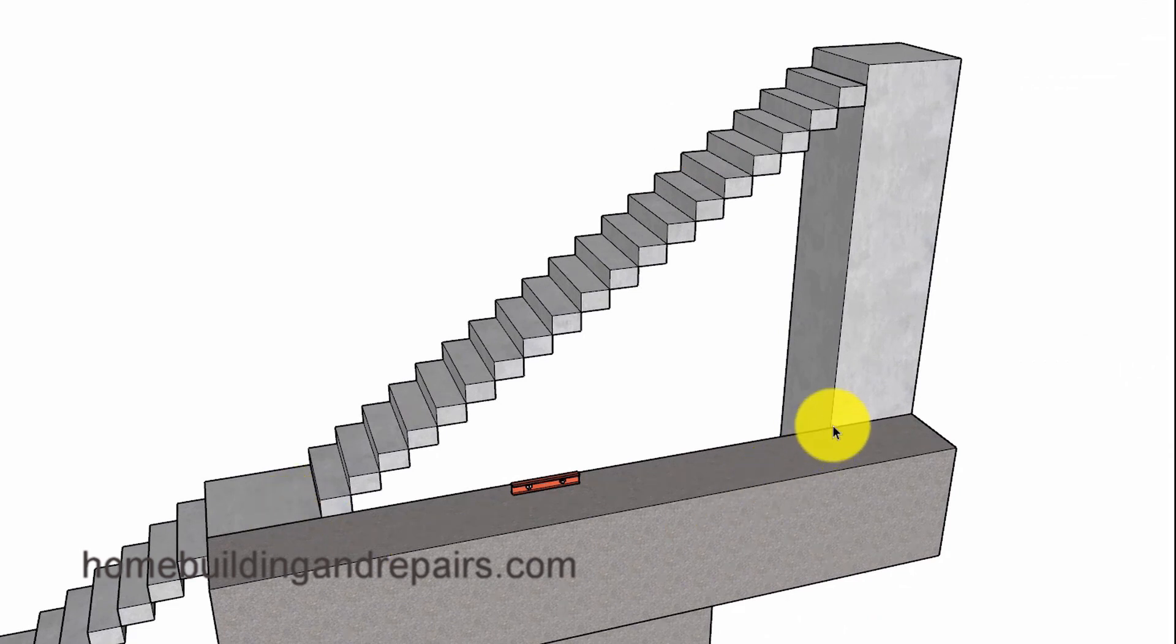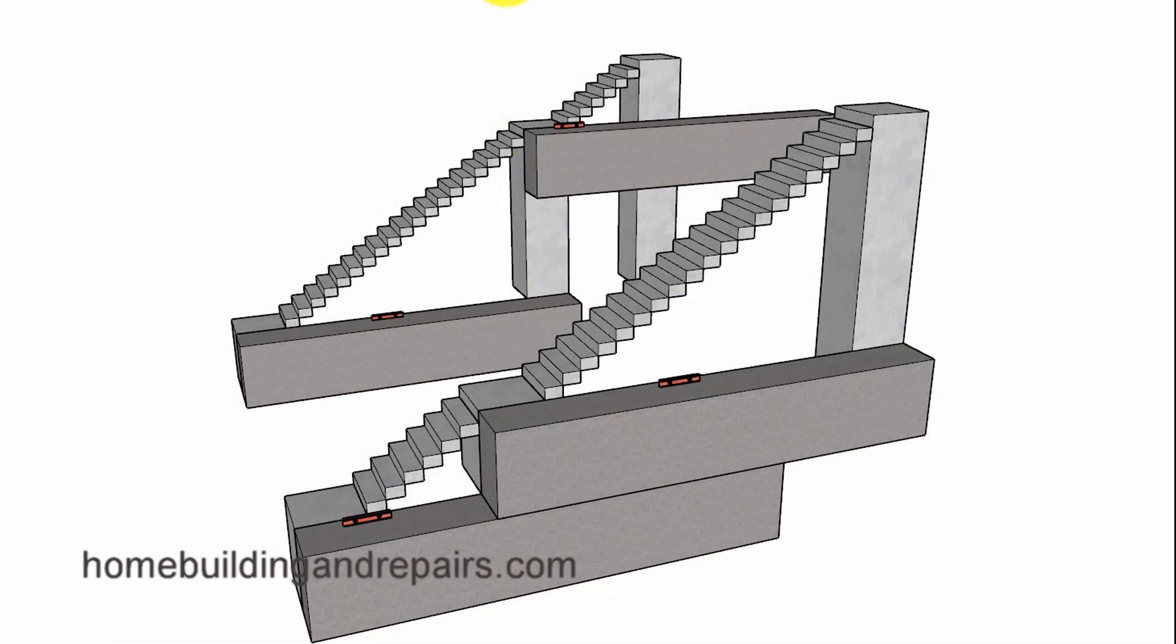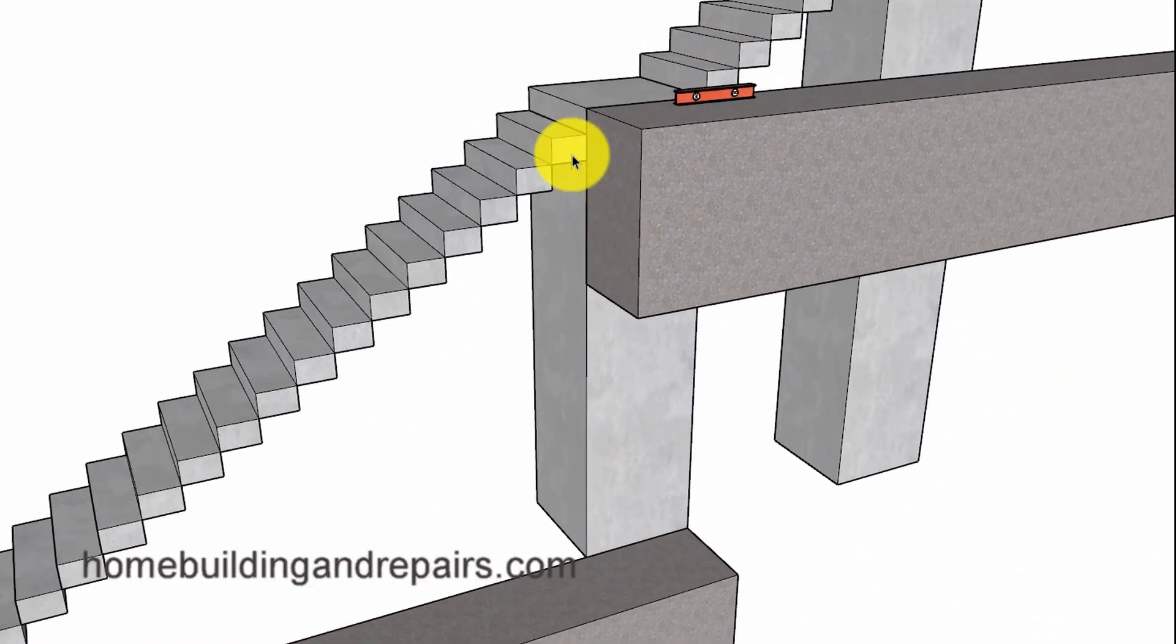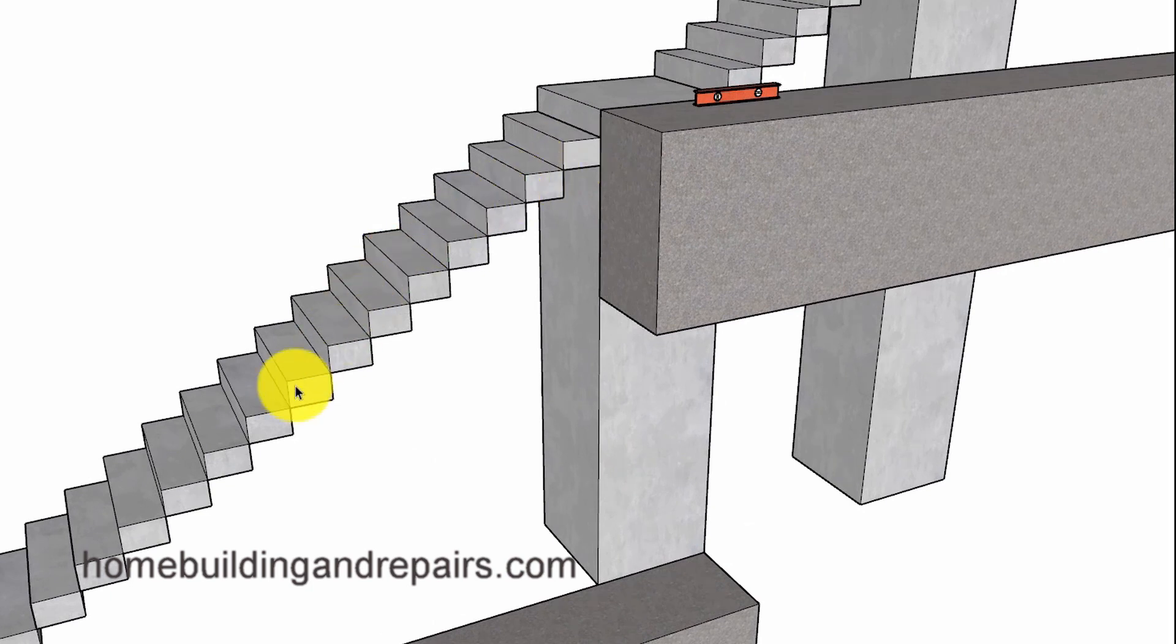And here we have a stairway with a vertical rise of less than 12 feet. So this stairway here is not going to be affected and won't need to be modified in any way. In the same situation, if we reversed the stairway to where we had the longer stairway on the bottom.